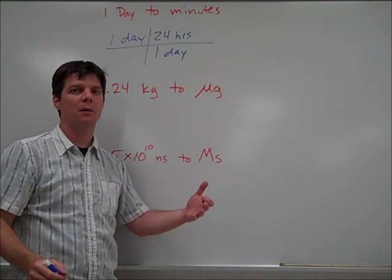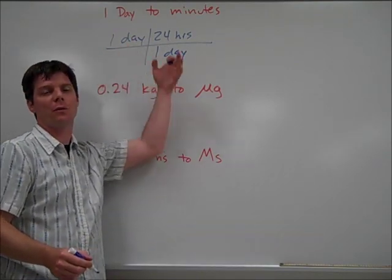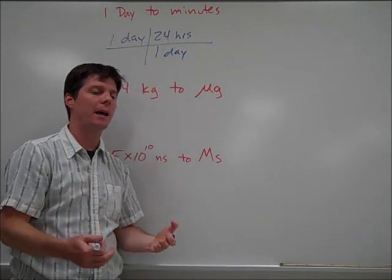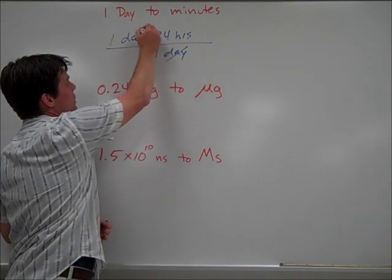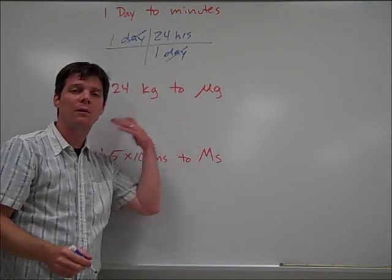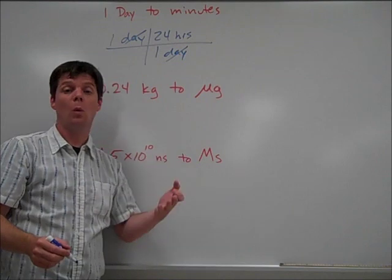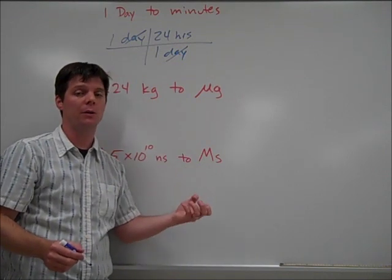Now, if I was given a different number of days, I could just plug in two days or three days, so we could modify that as needed. So we can see that days will cancel with days. Now, we've converted the number of days, one, into the number of hours. It's going to be 24.